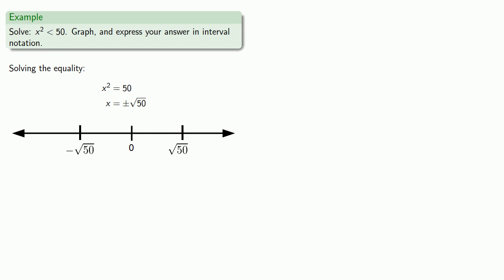Remember, x equals plus or minus square root of 50 solves the equality. But because we're good math students, we remember that the inequality exists. Our inequality is we want x squared to be strictly less than 50. Since the inequality is strict, we should have open circles at x equals square root 50 and at x equals minus square root of 50. This gives us three intervals to check.